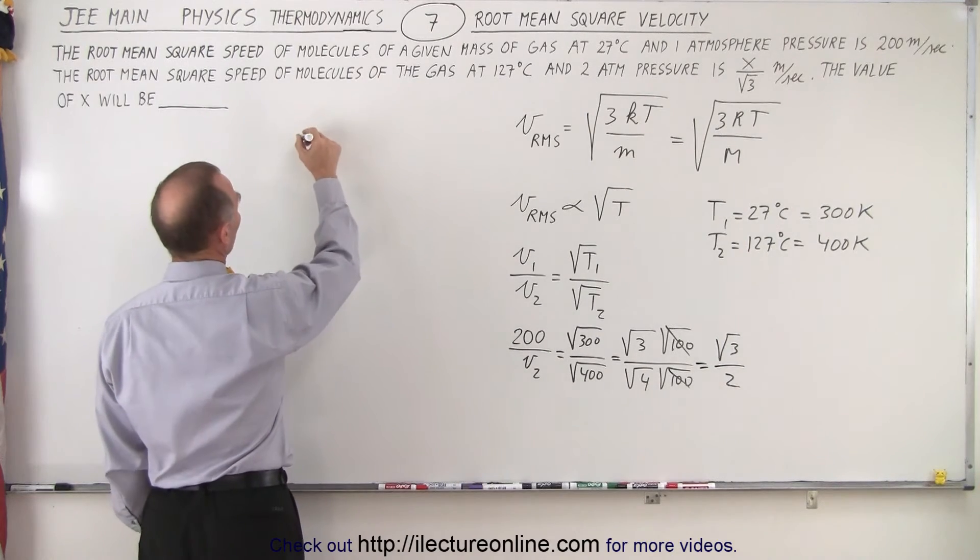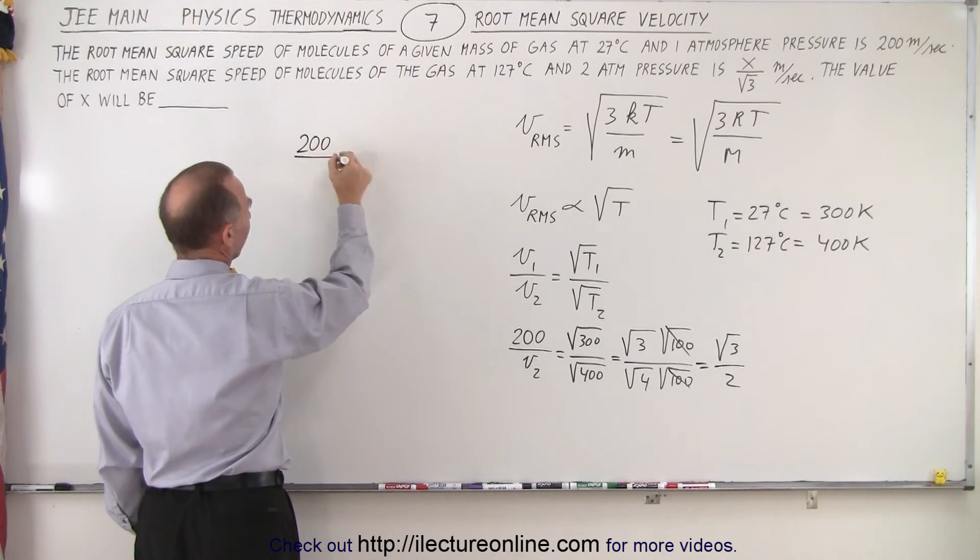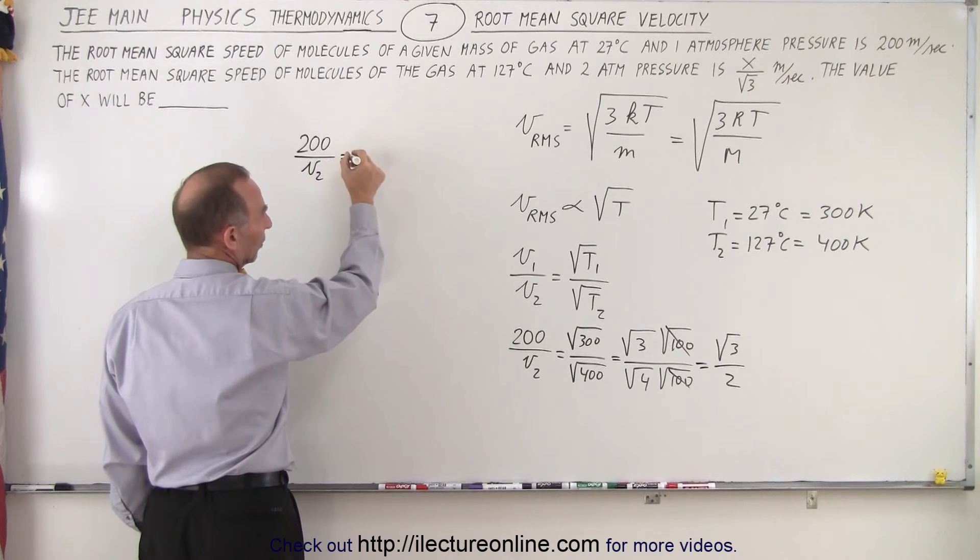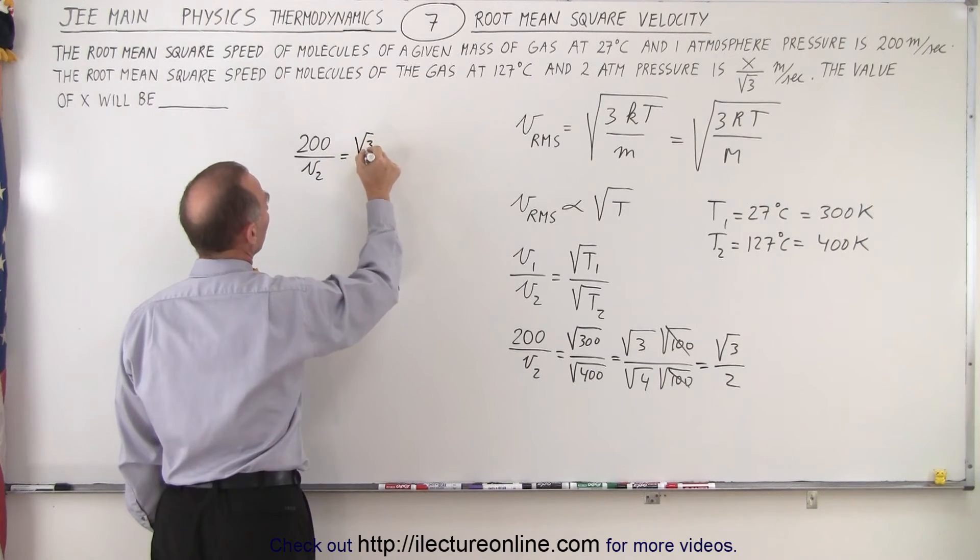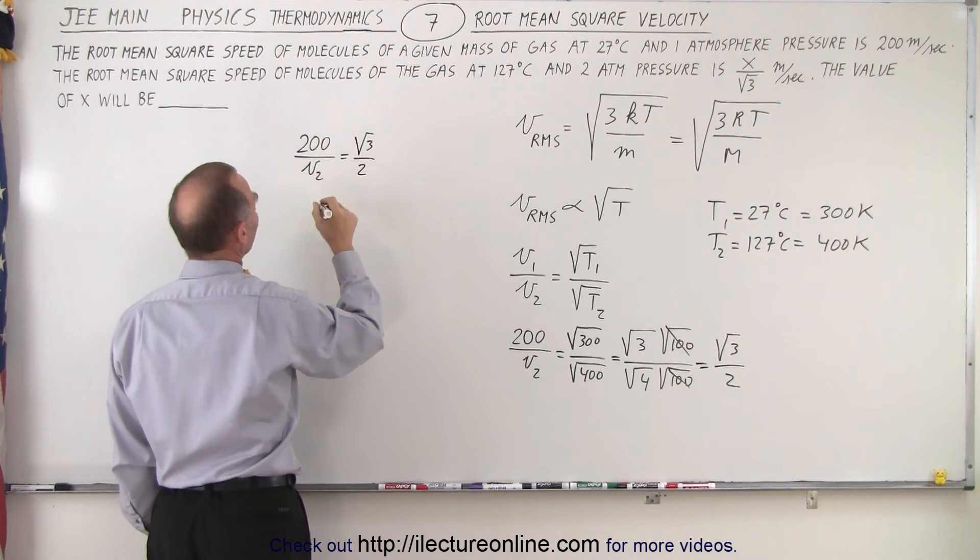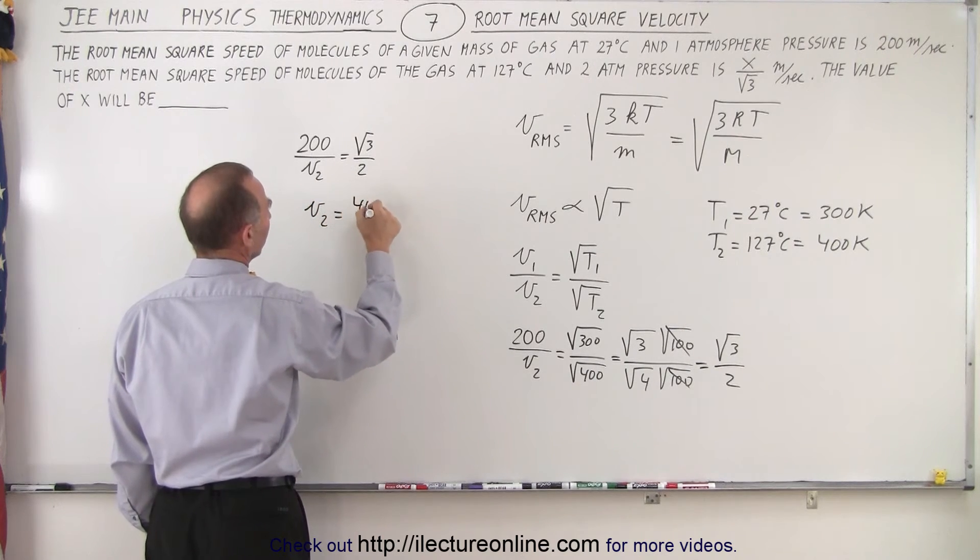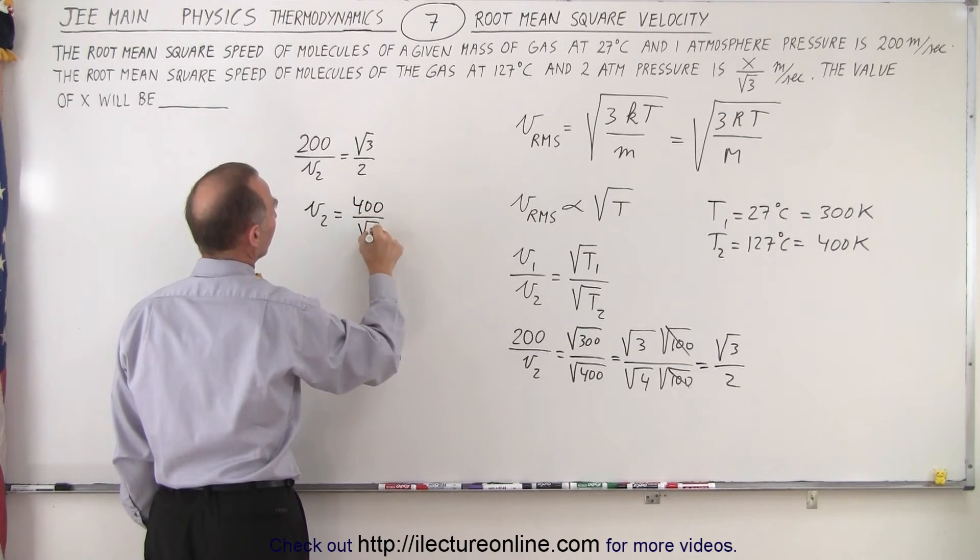So then the equation essentially becomes 200 divided by V2 is equal to the square root of 3 over 2, and then we can see that V2, therefore, is equal to 400 divided by the square root of 3.